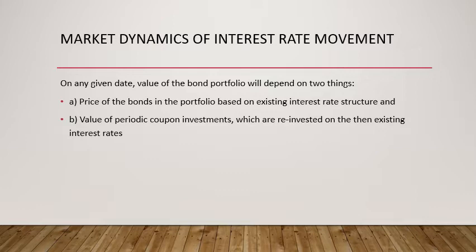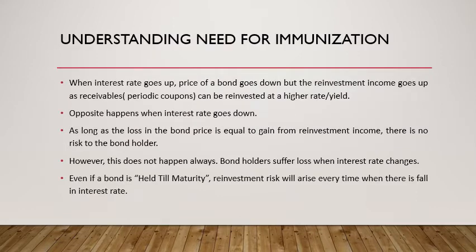On any given date, the value of a bond portfolio will depend upon two things: the price of the bonds in the portfolio based on the existing interest rate structure, and the value of the periodic coupon reinvestments. Remember, in a bond portfolio you may have multiple bonds, and the interest rate structure will vary across various periods. The yield curve is upward sloping, so bonds of different maturities — four-year, six-year, etc. — will have different applicable interest rates. Additionally, when you get coupons you reinvest them and generate further returns.